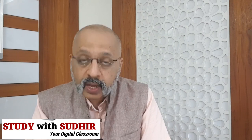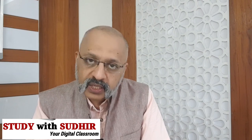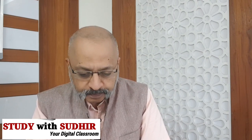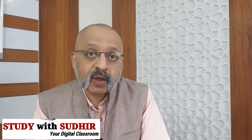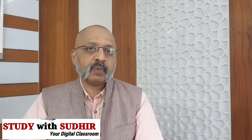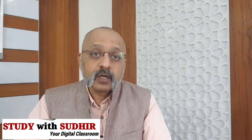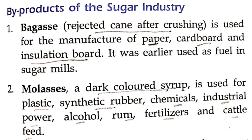The byproducts of sugarcane include: jaggery (gur) and brown sugar (khandsari). 30 percent of the sucrose is used to make white sugar. One major byproduct is bagasse (B-A-G-A-S-S-E) — the rejected cane stalks after crushing — which is used for the manufacture of paper, cardboard, and insulation board. It was earlier used as fuel in sugar mills.